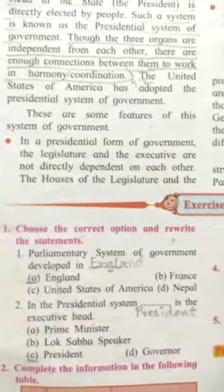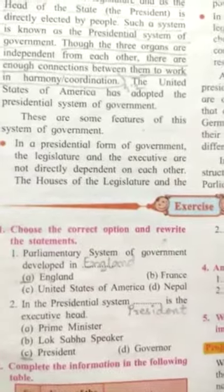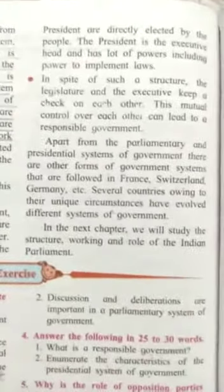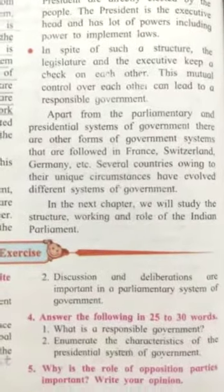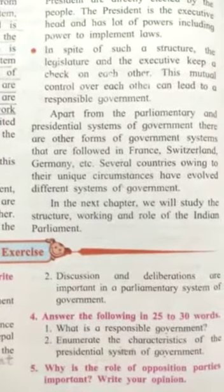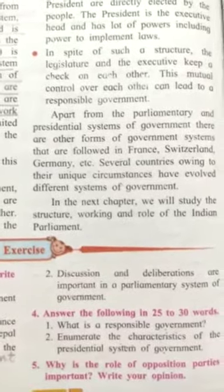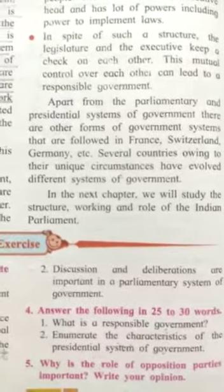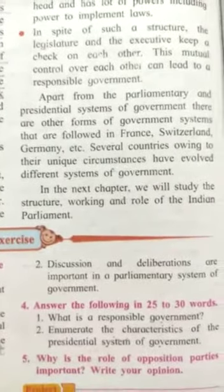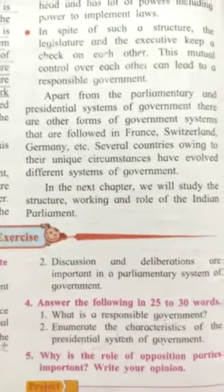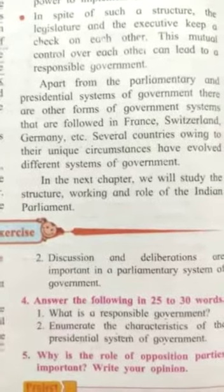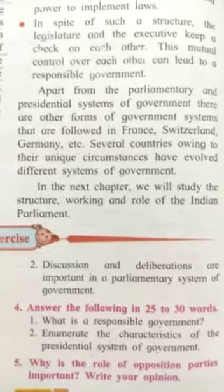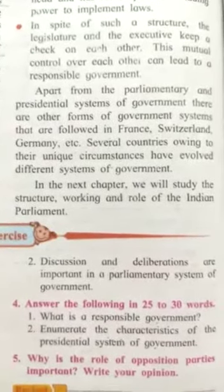Some features of the presidential form of government: the legislature and executive are not dependent on each other. The houses of the legislature and the president are directly elected by the people. The president is the executive head and has a lot of powers. In spite of such a structure, the legislature and executive keep a check on each other, and this mutual control can lead to a responsible government.